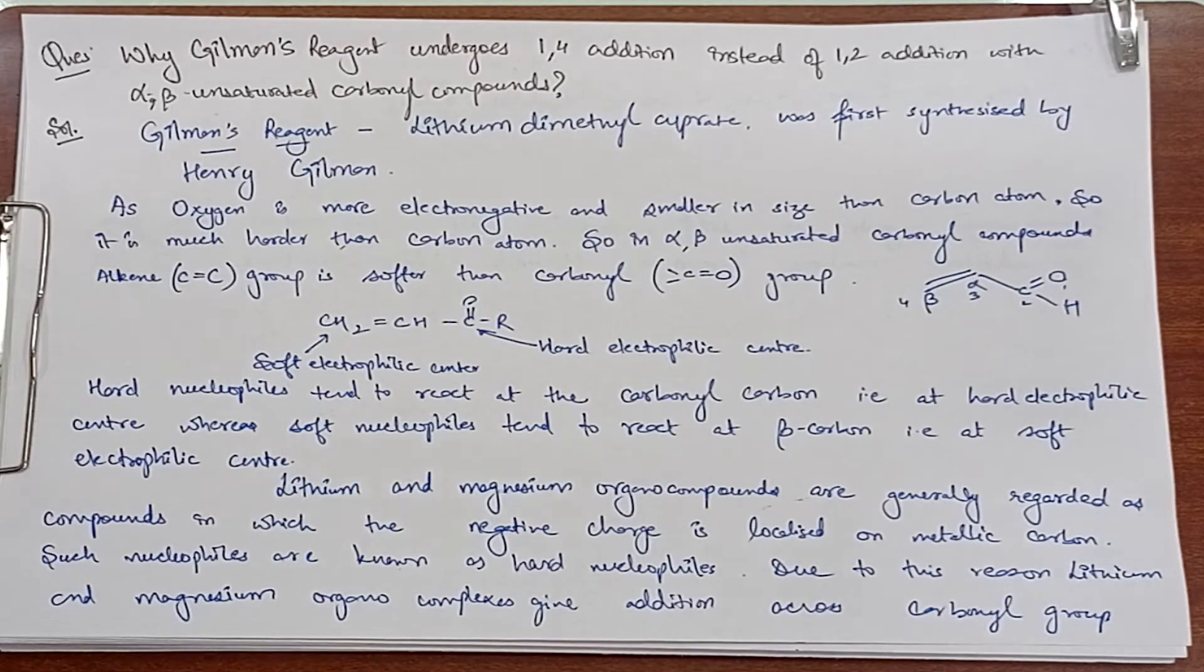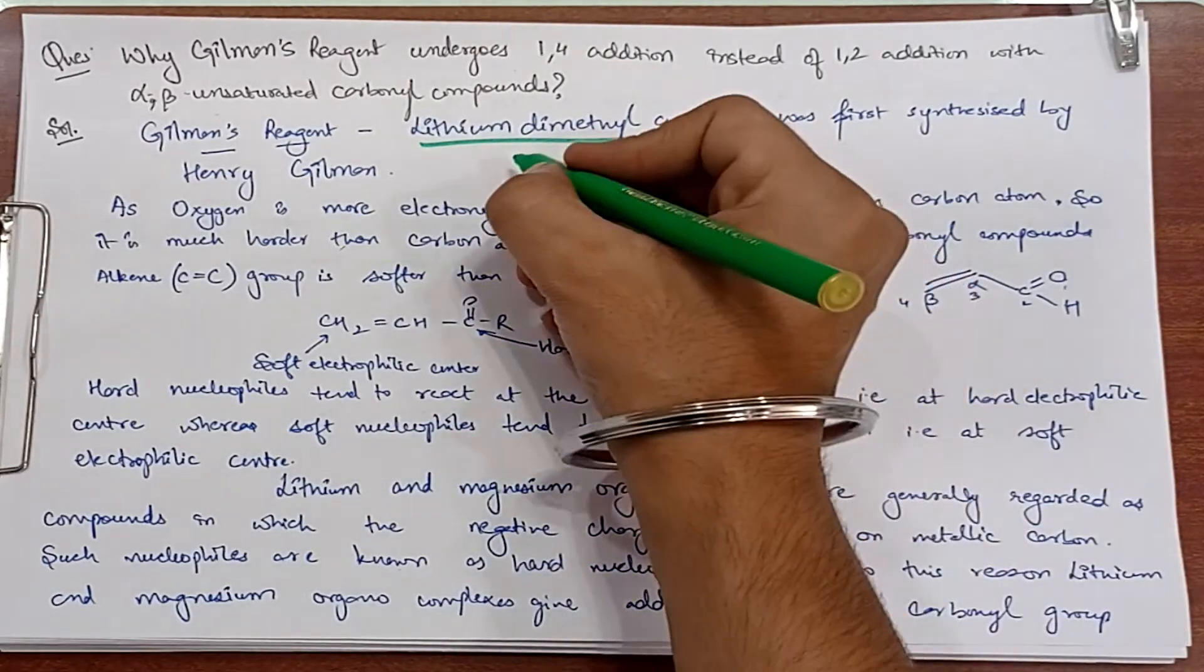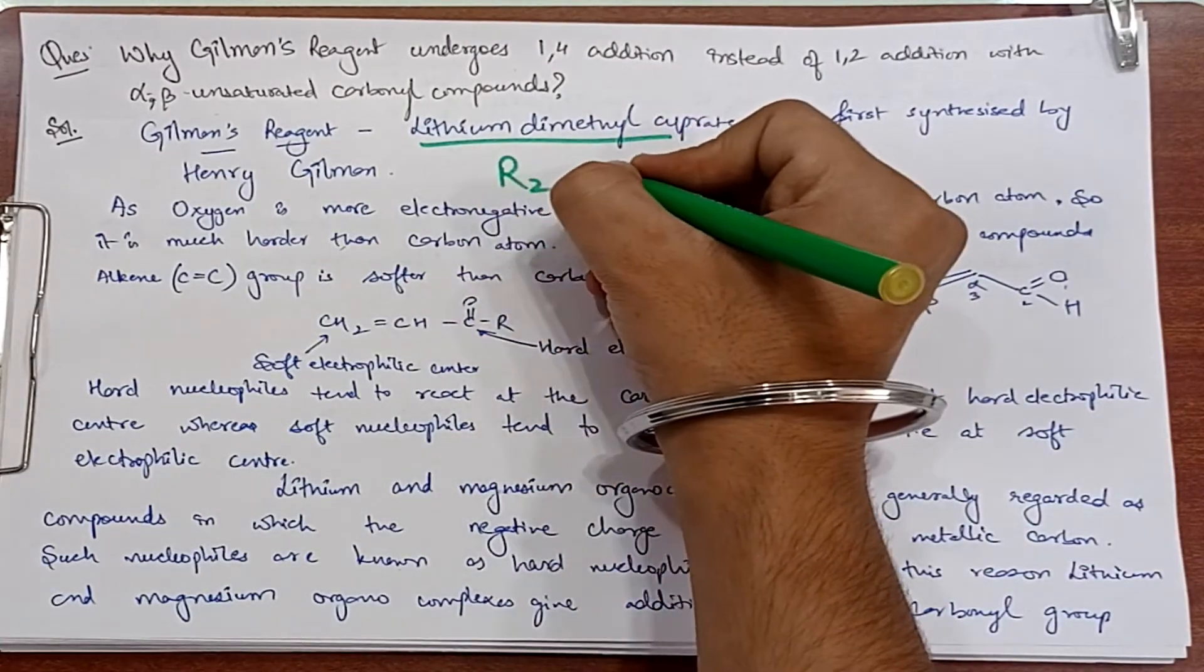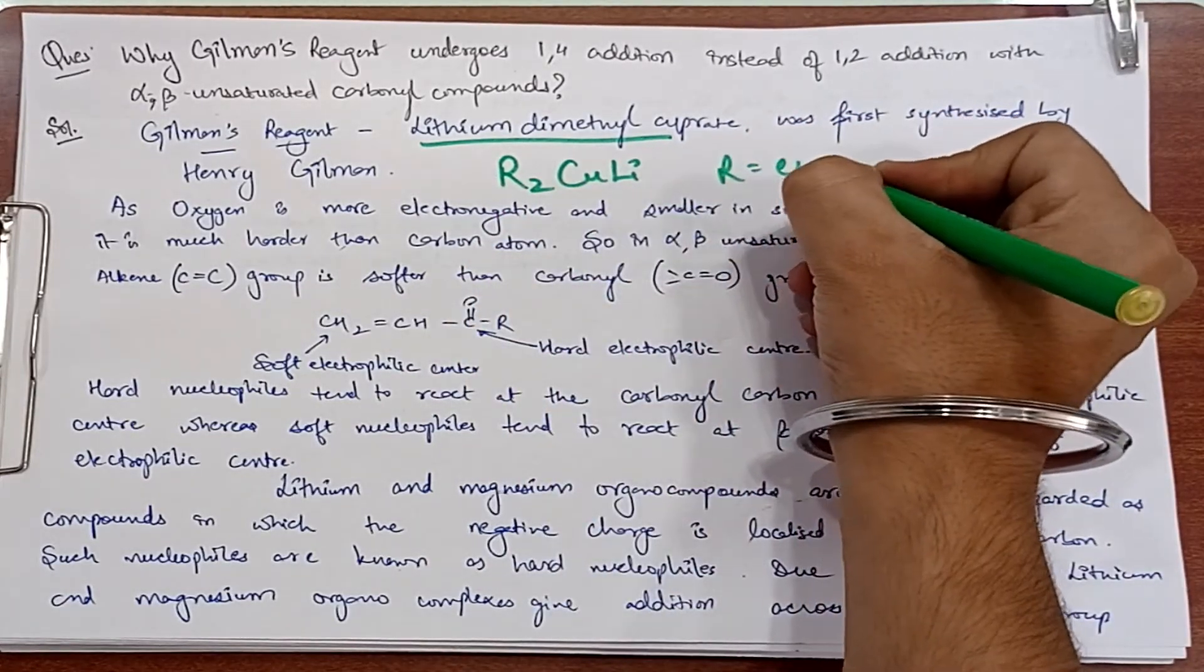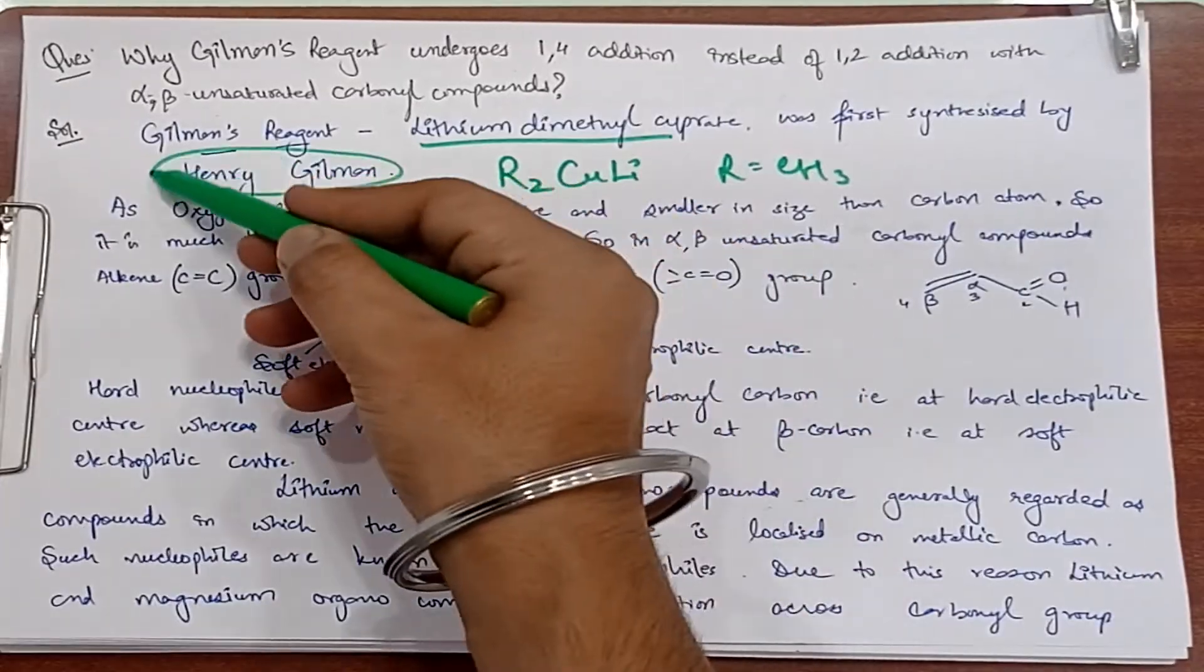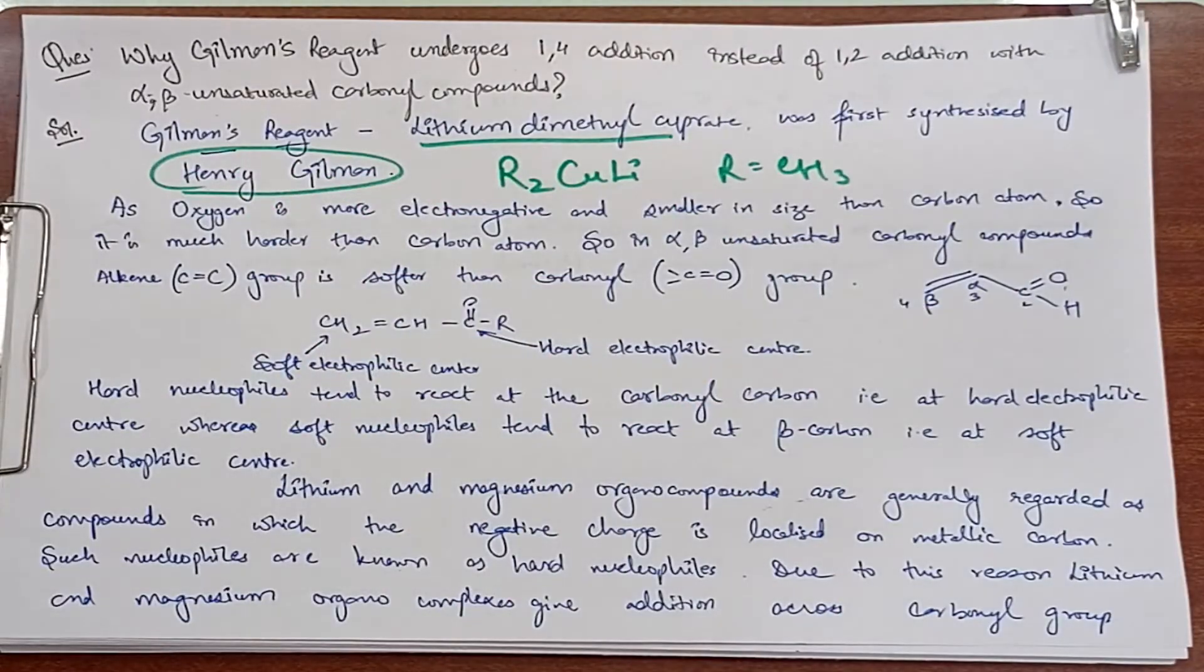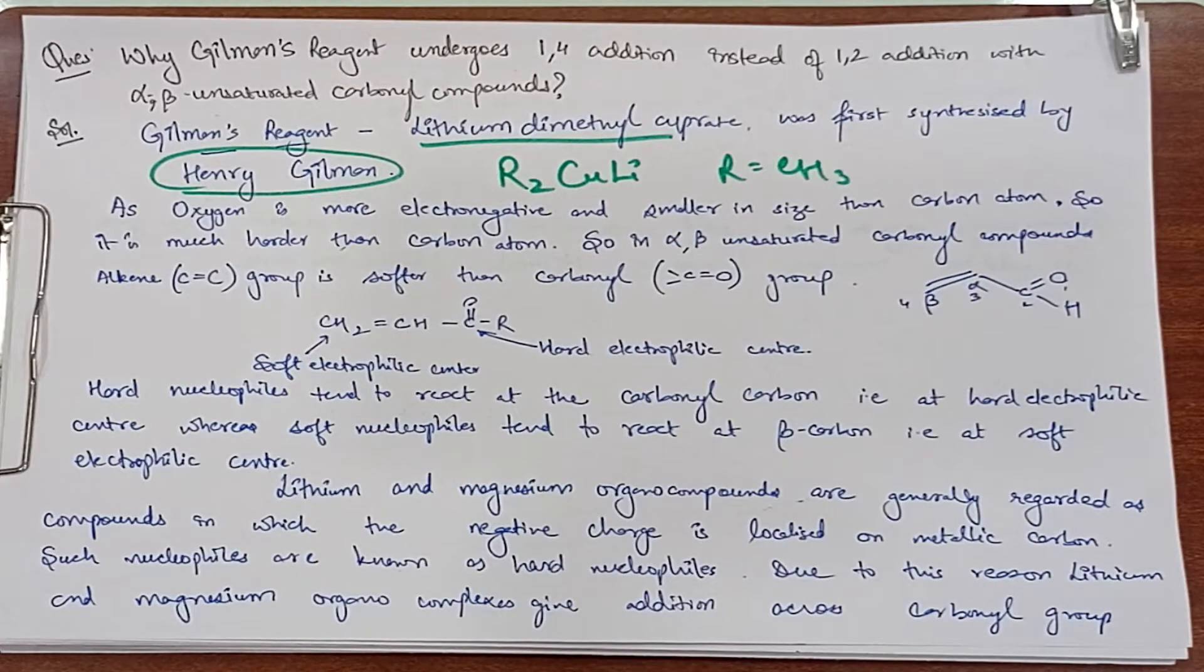Gilman's reagent is lithium dialkyl cuprate. Lithium dialkyl cuprate means formula R2CuLi, where R is alkyl, which was our first compound that is Gilman's reagent. Henry Gilman discovered it, so it's called lithium dialkyl cuprate, but the general term for this Gilman's reagent is lithium dialkyl cuprate. Today we consider all cuprates Gilman's reagent.